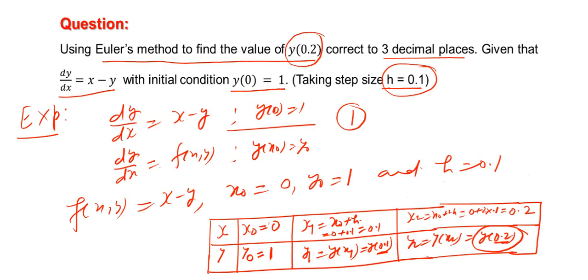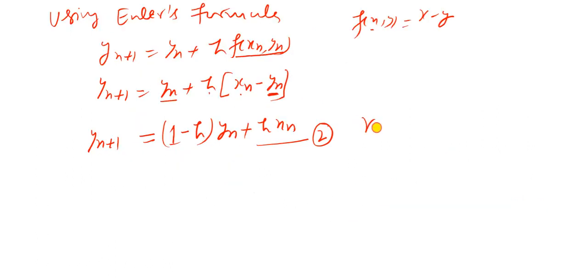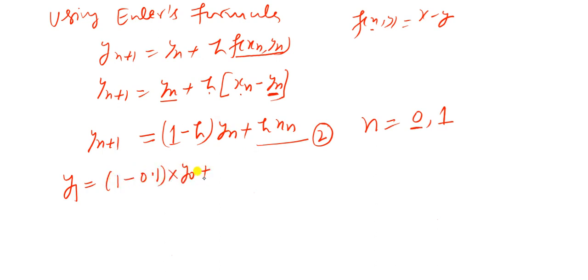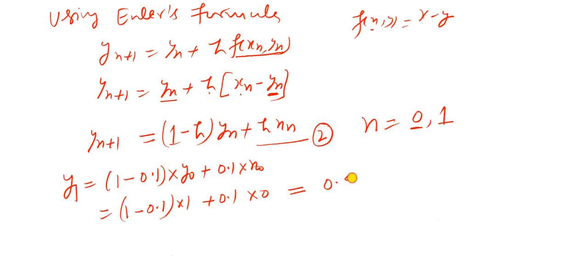According to the table, we compute y1 and y2. With n = 0 and n = 1, when we put n = 0 in equation 2 we obtain y1 = (1 - h) * y0 + h * x0 = (1 - 0.1)(1) + 0.1(0) = 0.900, correct to 3 decimal places.